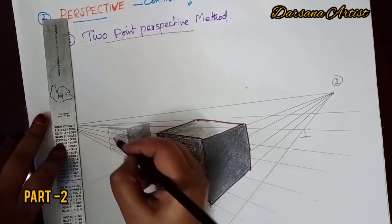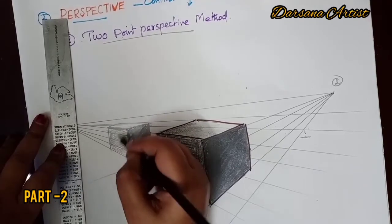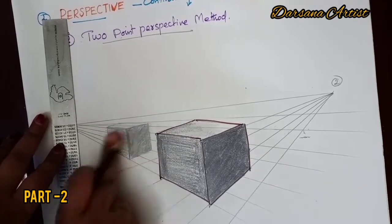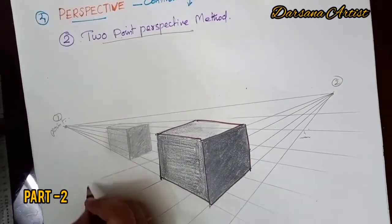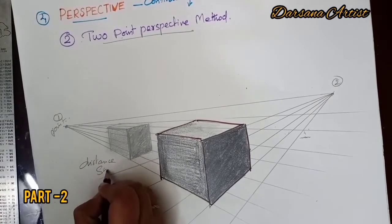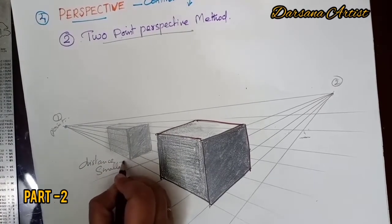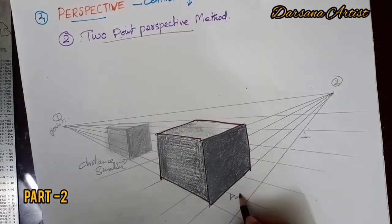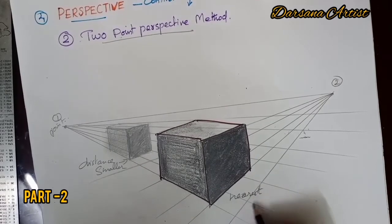We have a small piece. The distance makes it smaller, and the nearest piece is bigger.